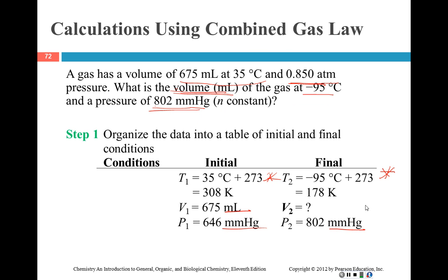In the example that the book is working, they changed the 0.850 atmospheres to 646 millimeters of mercury. You know how to do that, right? 0.850 atmospheres times 760 millimeters of mercury per one atmosphere. Our volume was in milliliters, and they're asking for the answer in milliliters, so we can just leave it in milliliters. Then we have to convert minus 95 degrees C to Kelvin, and we have to convert 35 degrees C to Kelvin.